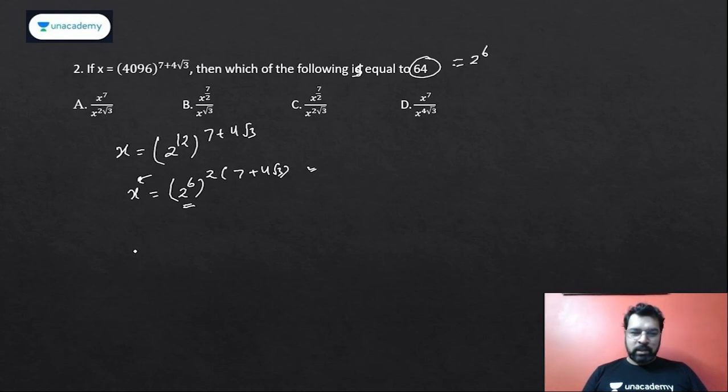Now this is 64, and I need this. So I can shift this power to the left-hand side. Can I say it will be x raised to the power 1 upon 2 into 7 plus 4 root 3, is equal to 64? Let me write this here.